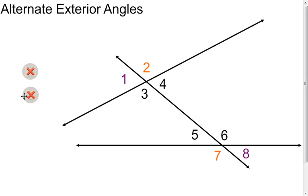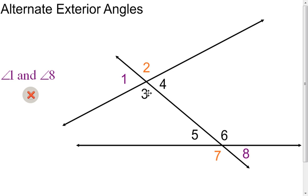Alternate exterior angles follow the same concept as alternate interior angles — just now these are going to be on the outside of the two lines. Looking at angle one and angle eight, they're on opposite sides of the transversal and on alternating lines. We also have angle two and angle seven as alternate exterior angles.